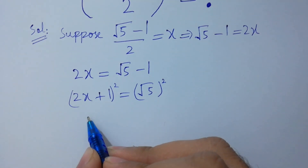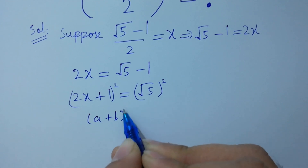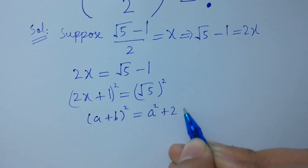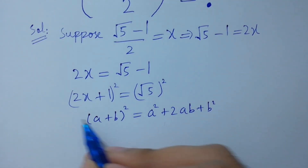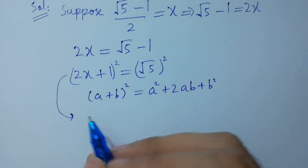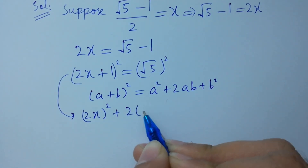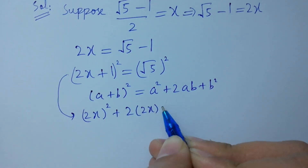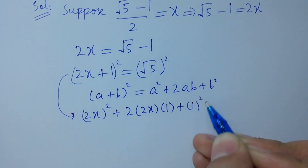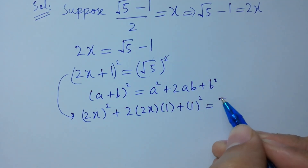As we know, the formula of (a plus b) whole square equals a squared plus 2ab plus b squared. So we apply that here: a is 2x, b is 1, and on the right side the square will cancel with the square root, giving us 5.